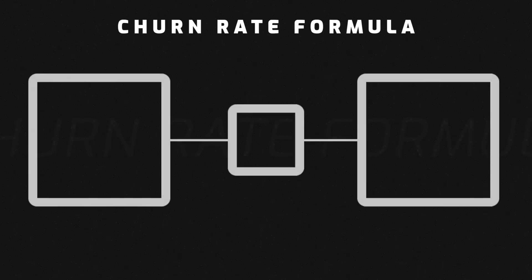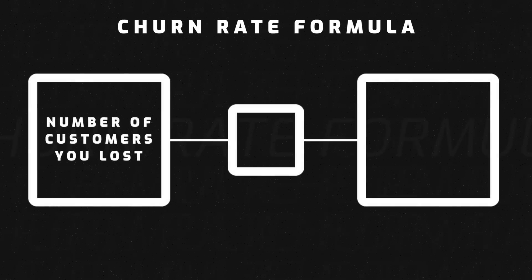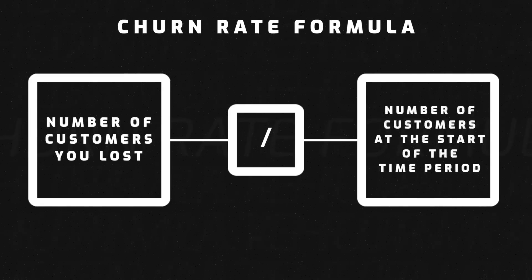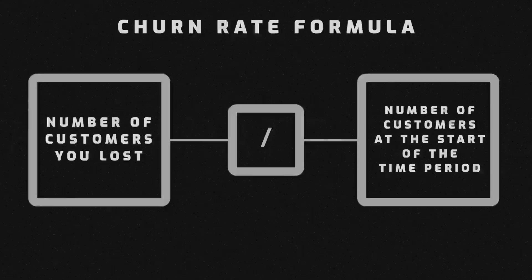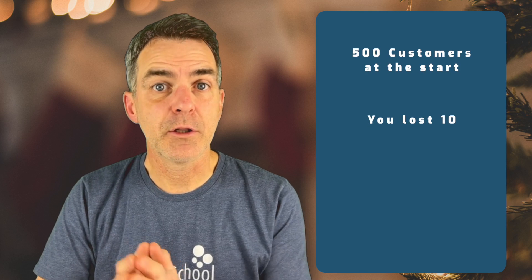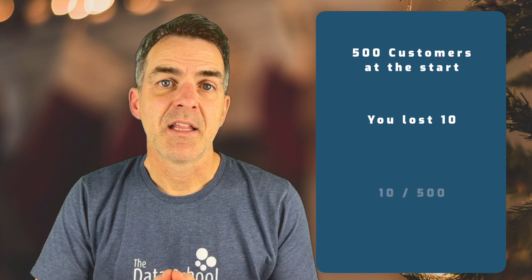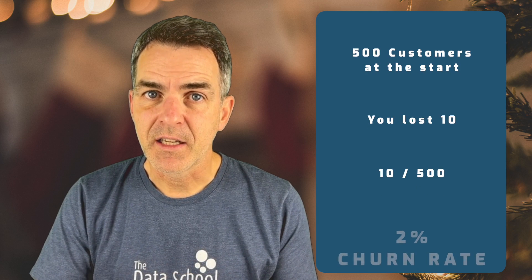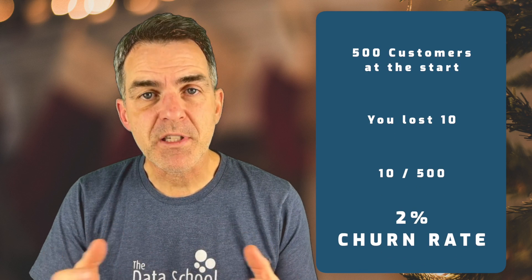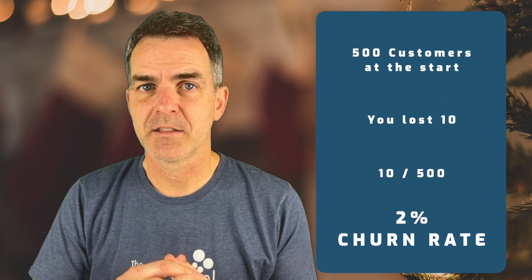The churn rate formula is the number of customers you lost divided by the number of customers at the start of the time period. For example, if you had 500 customers at the start and you lost 10, then 10 divided by 500 gives you a two percent churn rate. You can edit these calculations to fit whatever time periods work for you.